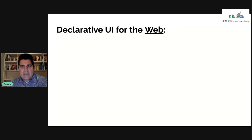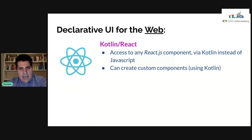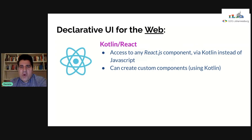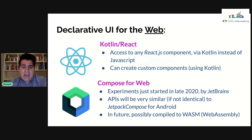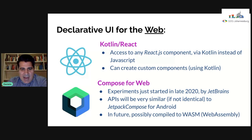For the web, Kotlin has very convenient wrappers for React, meaning you can write your web UI using React components without even needing to use JavaScript — you can just use Kotlin. Even more interesting, though still just experimental, is Compose for Web — the web version of Jetpack Compose. We can expect the API to be very similar, probably not identical, but very similar to Jetpack Compose.